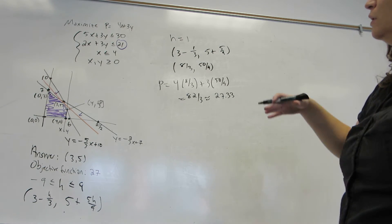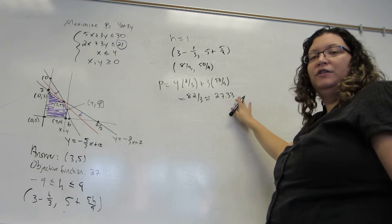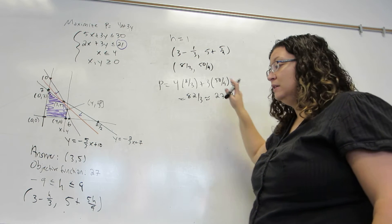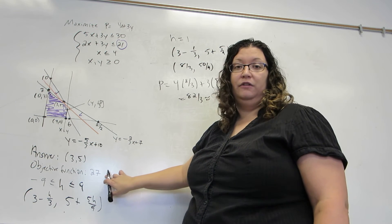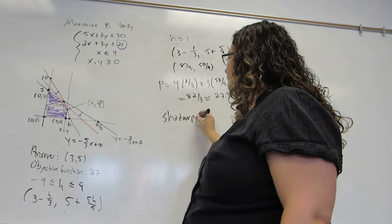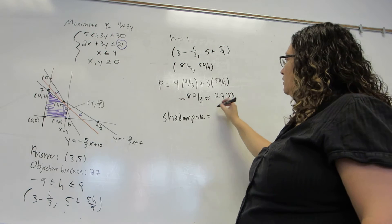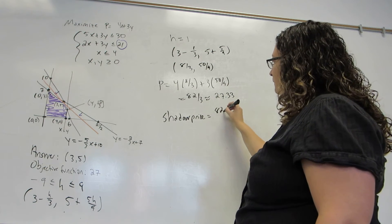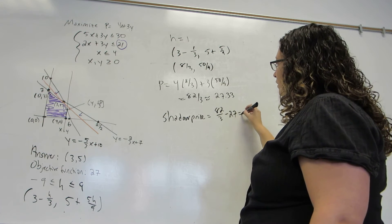Now, once I've plugged in H equals 1 and found the value of the objective function, I'm going to subtract from this the original value of the objective function, which is the 27. So my shadow price will be the 27 and a third minus the 27, or one third.